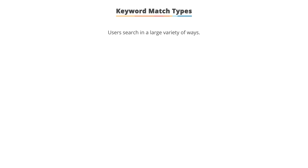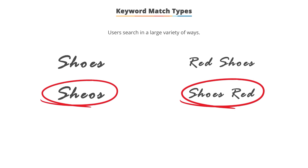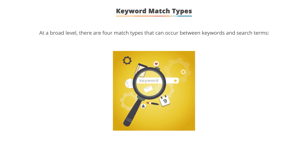Users can search in a large variety of ways, including many spellings, slight word variations, plurals and singulars, and so forth. You can't include every possible keyword you want to use in your advertising in your account. Thus, we look at how keywords can match to search terms. We're going to examine each of the nuances of match types. There are four match types we can use.